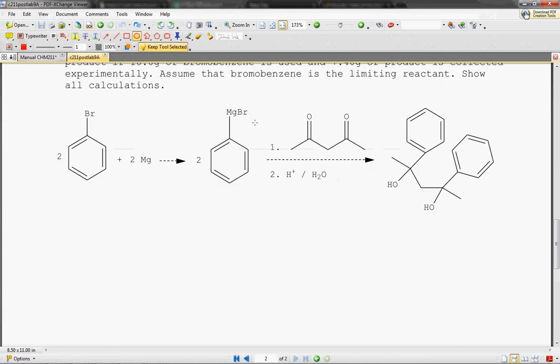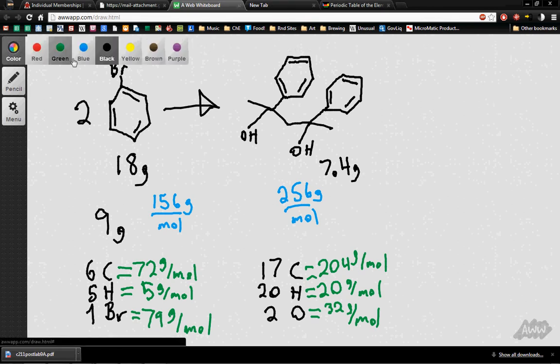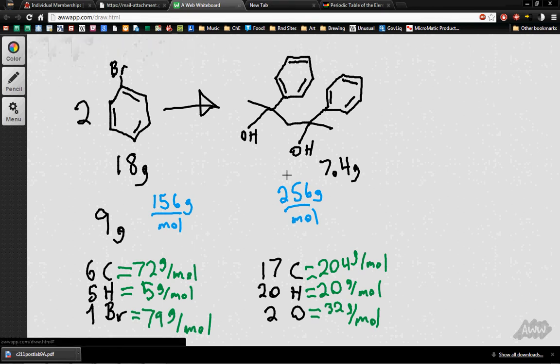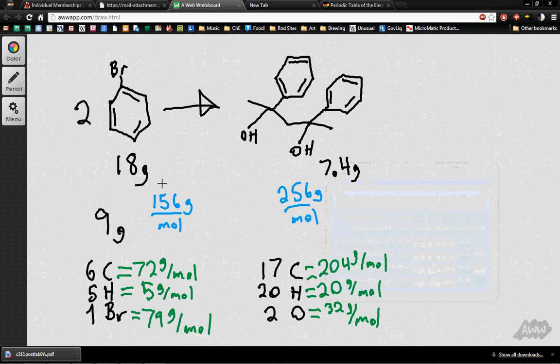And so we've got 7 grams of this substance. It was 7.4 grams of your final product. So let's calculate how many moles we've got. So we've got 9 grams divided by 156 grams per mole. That yields us about 0.057 moles of this bromobenzene.